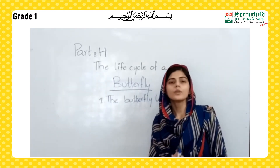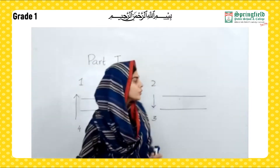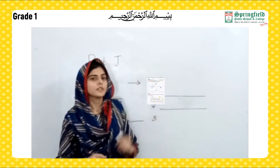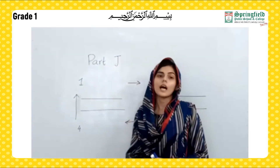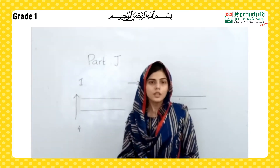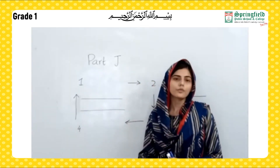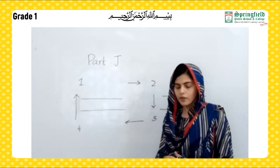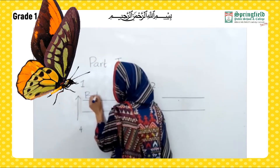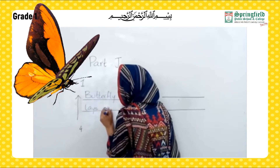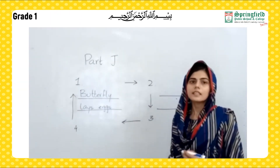Now students, moving towards our next part — Part J. In Part J, what you have to do is write about the life cycle of the animal you have chosen. You can use your work from previous parts. In the blocks, you have to draw or glue the picture of that animal. As I have chosen butterfly, I am going to write here: butterfly lays eggs. And in the block, I will draw the picture of the butterfly laying eggs.